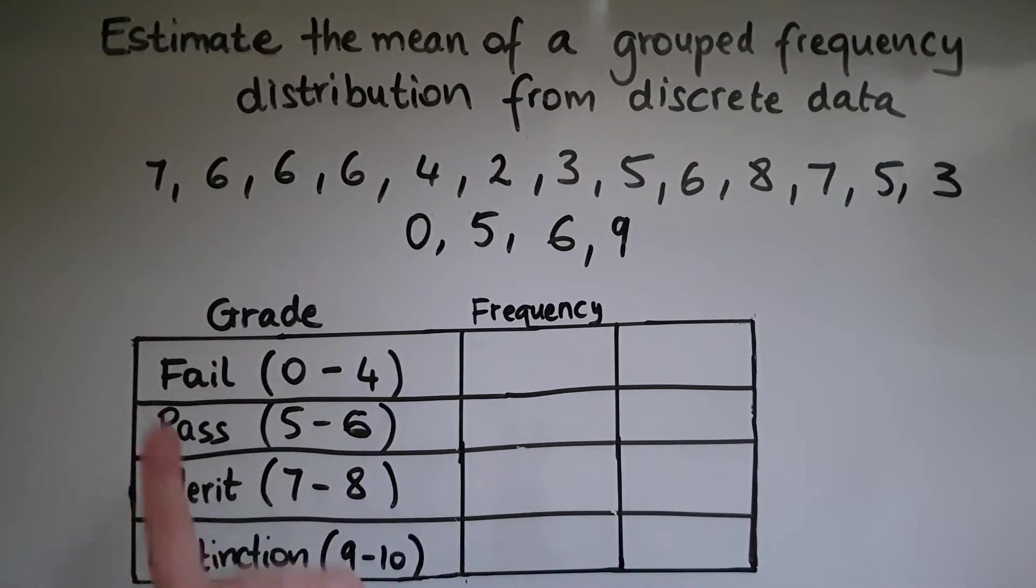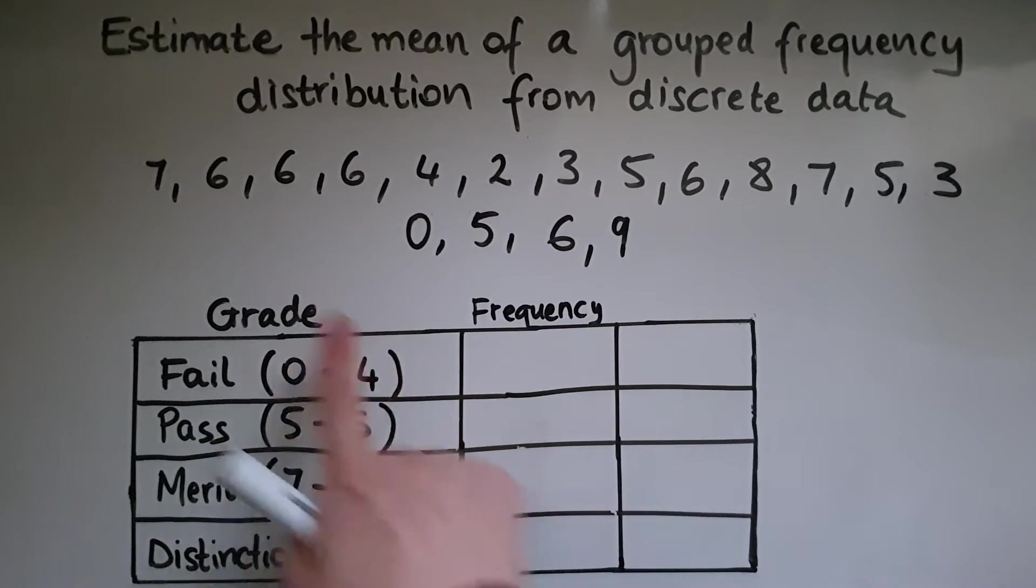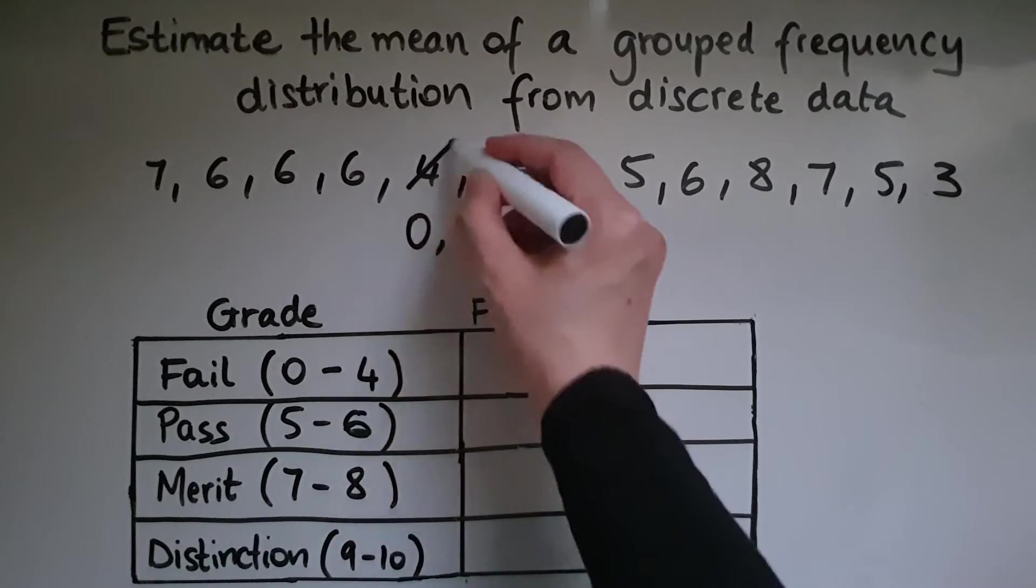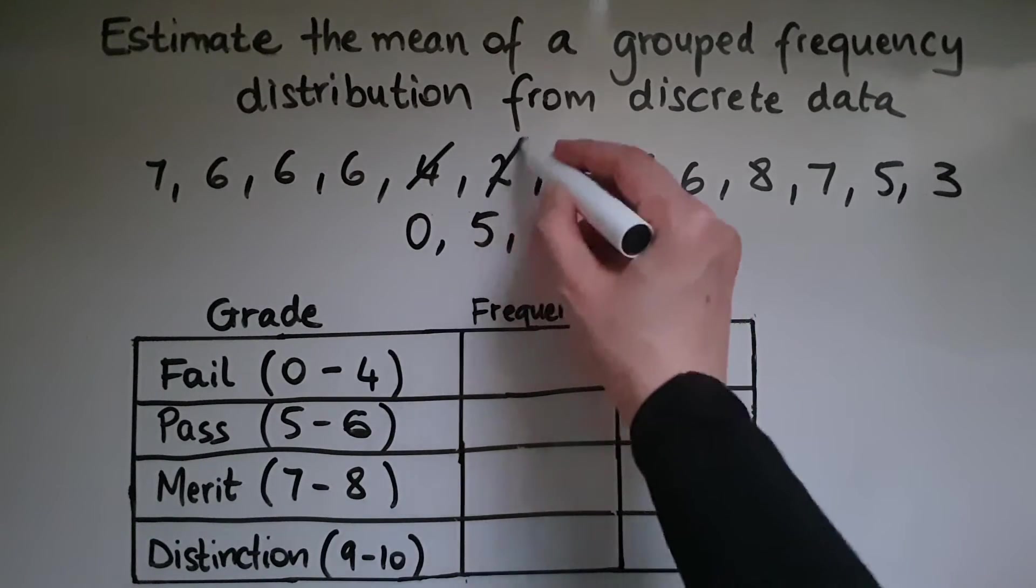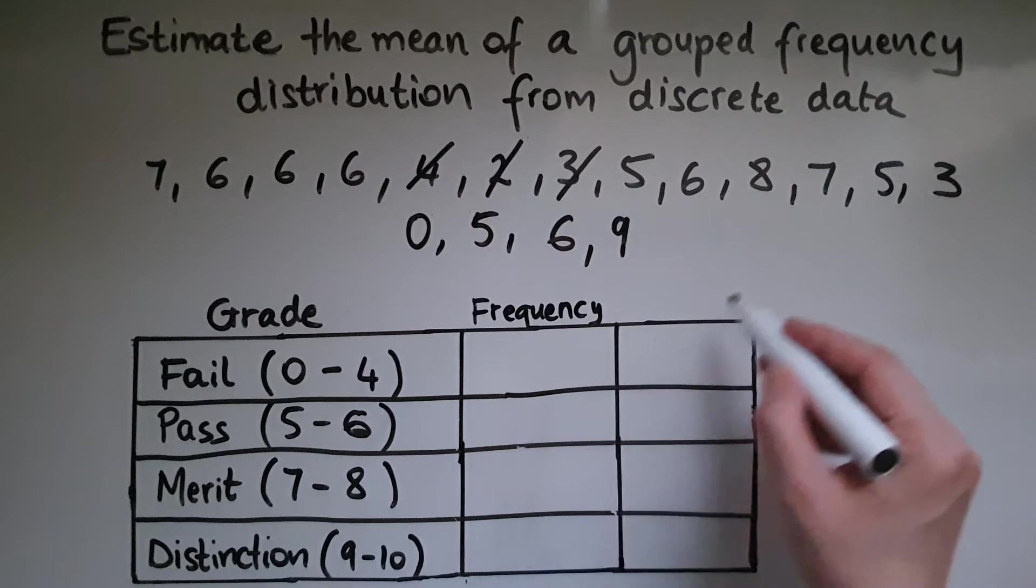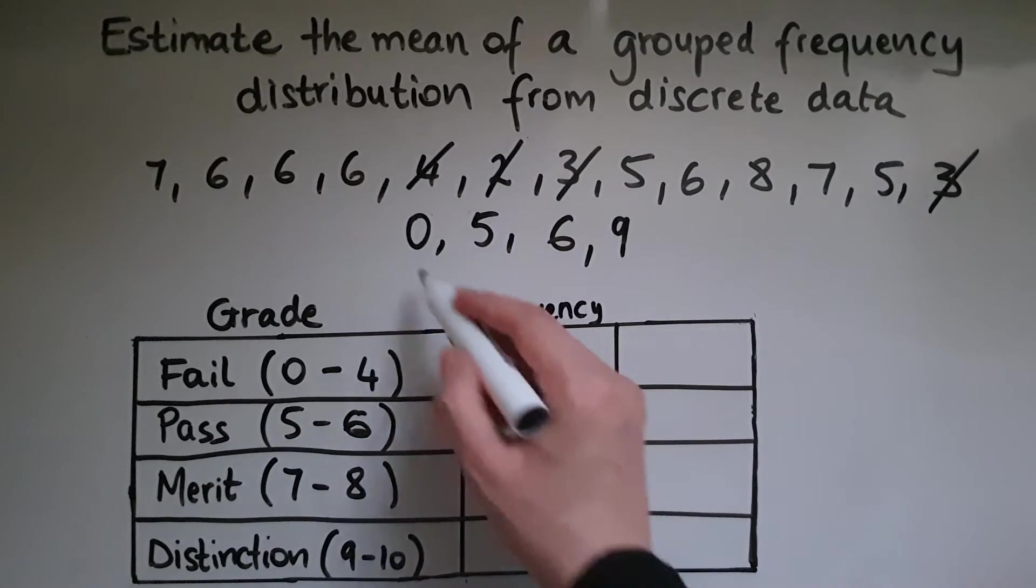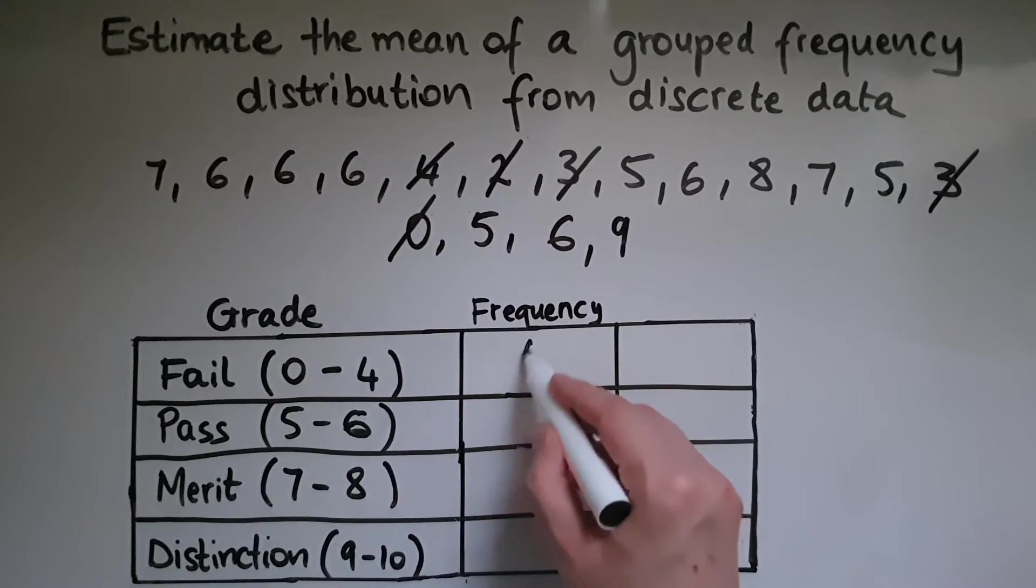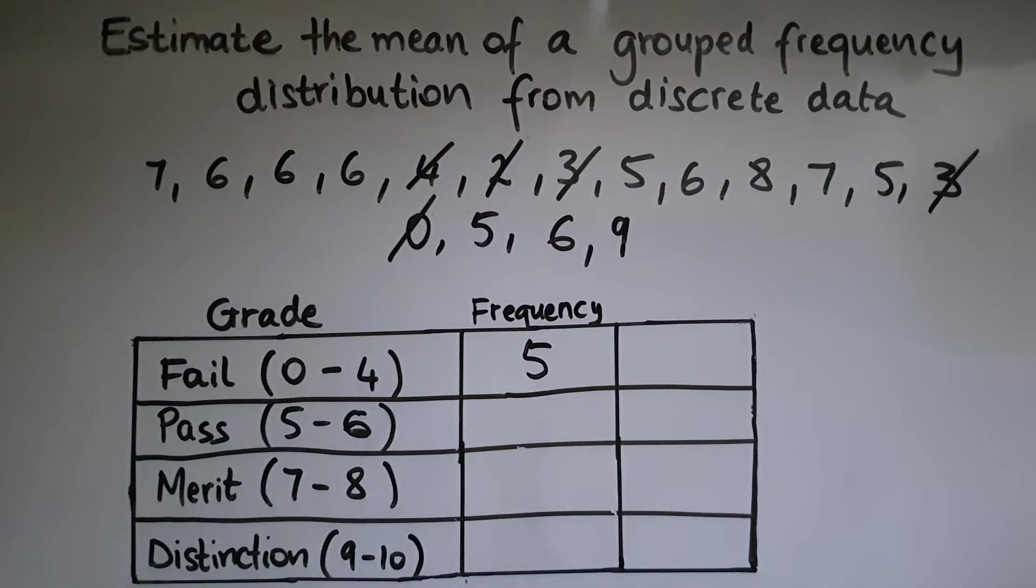So looking at fail between 0 and 4, we've got a 4 here. So there is 1, 2, 3, 4, 5. So there would be 5 fails.